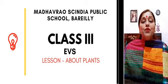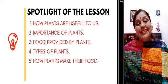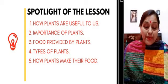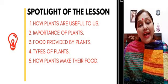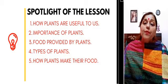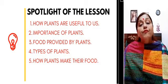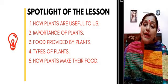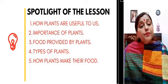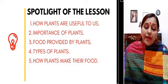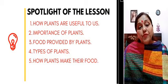Let me tell you the spotlight of this particular lesson. We are going to read about: number 1, how plants are useful to us; number 2, importance of plants; number 3, food provided by plants; number 4, types of plants; and number 5, how plants make their food.